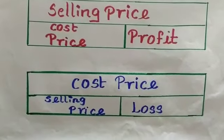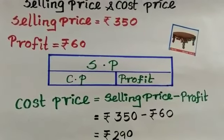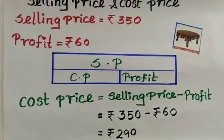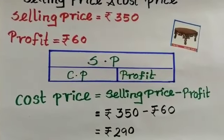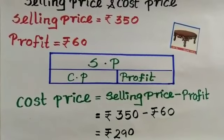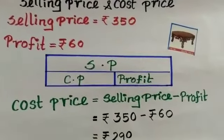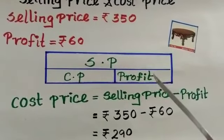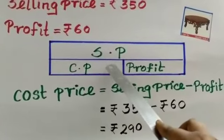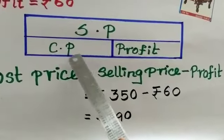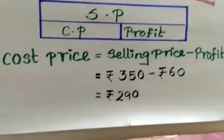With this bar model, let me explain one problem. The selling price of the furniture is Rs. 350. Profit earned by selling this furniture is Rs. 60. Here, we are going to find the cost price. This is a profit problem, so we are using a profit bar model. When we want to find the cost price, we should subtract the profit from the selling price.